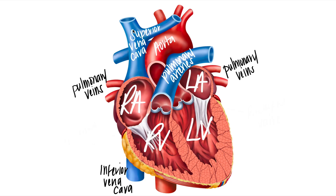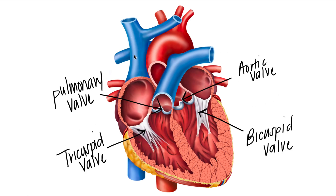Just a few other basic structures of the heart: we have the superior vena cava, we have the inferior vena cava, we have the aorta, we have the pulmonary arteries, and we have the pulmonary veins. Then we need to cover the different valves. These are the pulmonary arteries, making this the pulmonary valve right here. And this is the aortic valve leading into the aorta — those are pretty easy to remember.